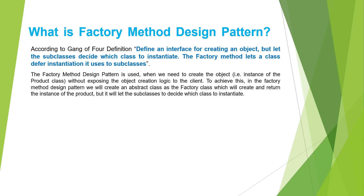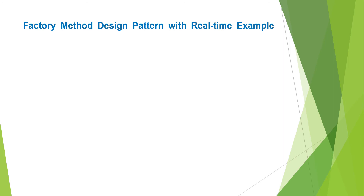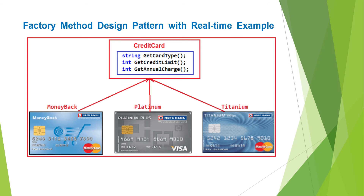Let us understand the factory method design pattern with one real-time example. Suppose we are developing an application for showing credit card information. As you can see in the image, we have three credit cards: MoneyBack, Titanium, and Platinum. These credit card classes are our product classes and are subclasses of the Credit Card super interface. The Credit Card super interface defines the operations: getCardType, getCreditLimit, and getAnnualCharge, which need to be implemented by the subclasses MoneyBack, Titanium, and Platinum.